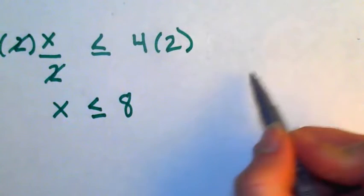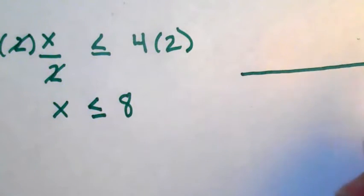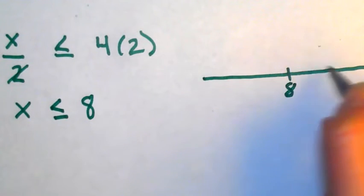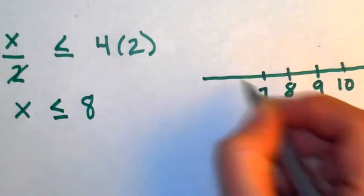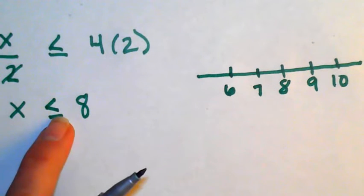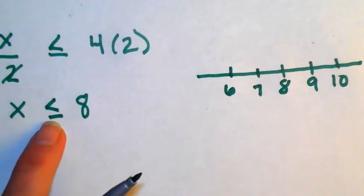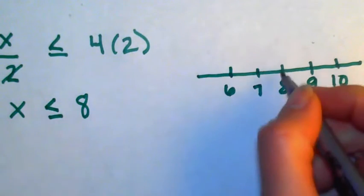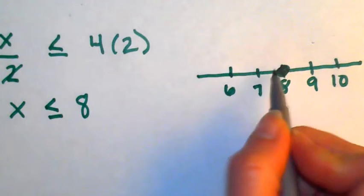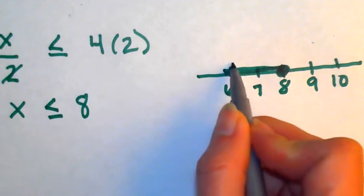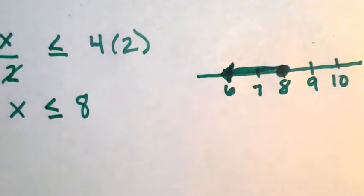I'm going to put that on the number line. 8, 9, 10. Just get a few numbers on there so it's clear what I'm graphing. x is less than or equal to 8. 8 is part of my solution because of that equals, so I'm going to put a closed dot saying, yep, it's part of the solution. So is any number lower, less than, going in that direction?